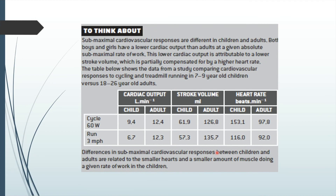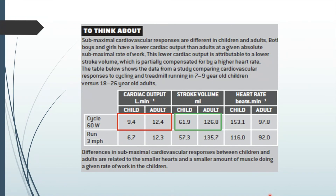Comparing children and adults: cardiac output in adults is significantly higher than in children. The main reason is that adults have bigger, stronger hearts and therefore a greater stroke volume. Children do have a higher heart rate compared to adults, which compensates slightly, but not enough to achieve a similar cardiac output. So the main difference is that cardiac output is higher in adults.